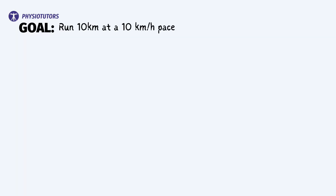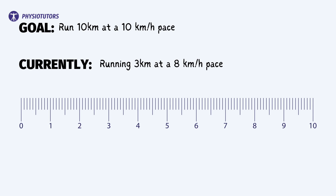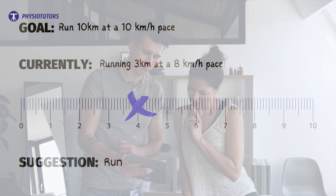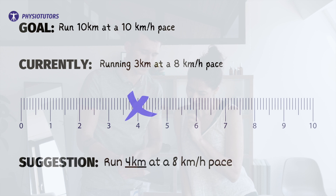Say a patient's goal is to return to running 10 kilometers at a pace of 10 kilometers per hour. At the moment she is running 3 kilometers at a speed of 8 kilometers per hour, which gives her a pain of 4 out of 10 that settles within a couple of hours. I would then be curious about her pain rating if we pushed a little bit more — we could suggest she runs 4 kilometers at the same speed and see if she can still perform this activity with tolerable pain.